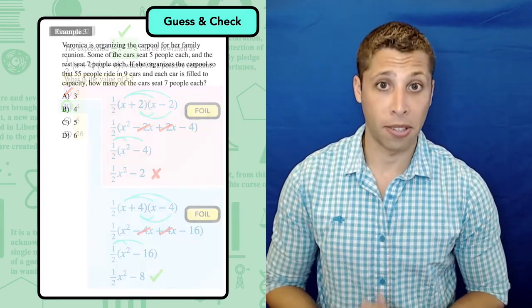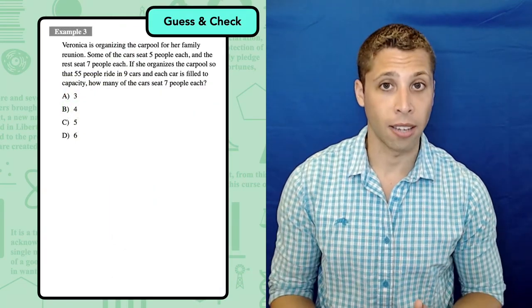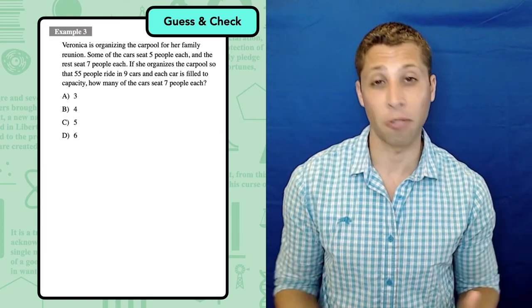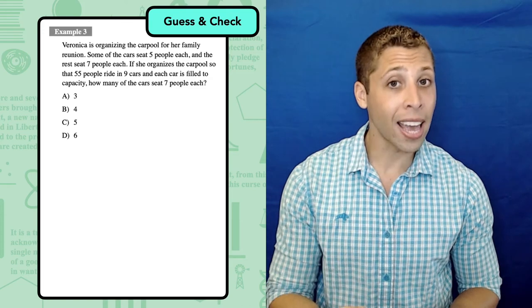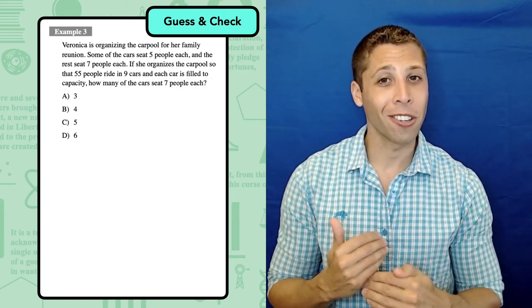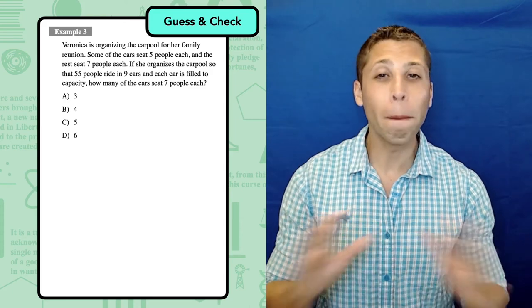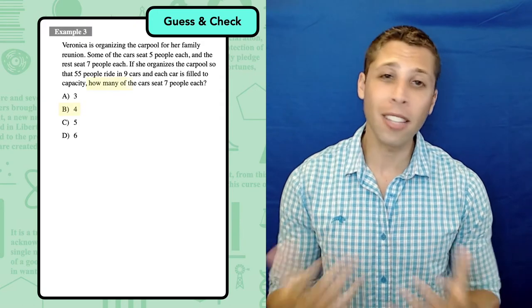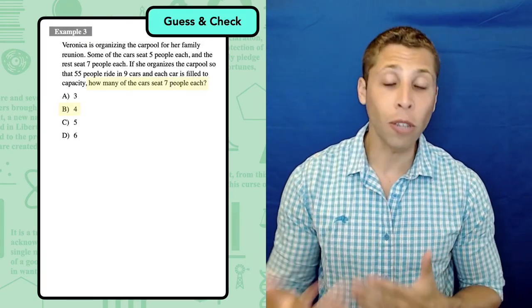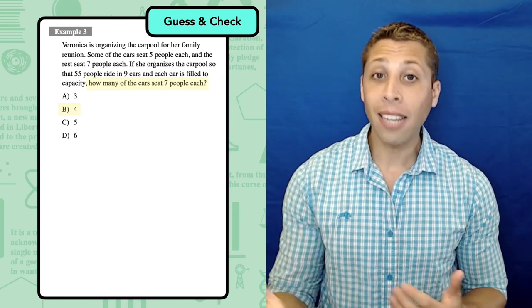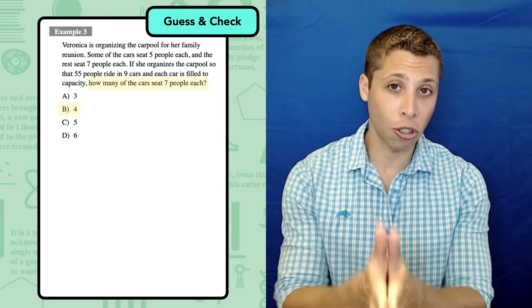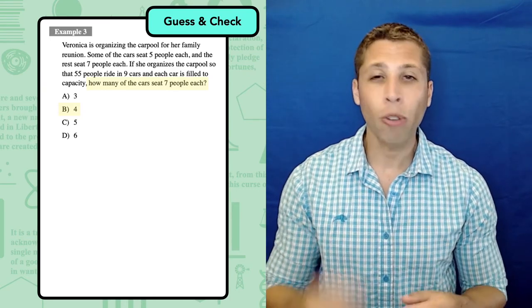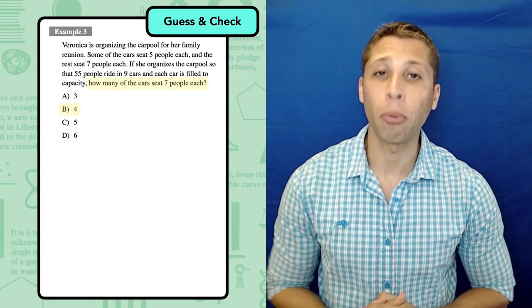This next question might be the opposite case. It's easy to read, but hard to understand. A lot of people have trouble sorting through the stories that just throw a lot of information at you at once. Guess and Check, once again, lets us reverse the way we think about the question. We can start with the answer choices, which are much easier to understand than the question. I'd guess choice B first because it's in the middle. And if I'm wrong, I can adjust by moving toward a bigger or smaller number. But guessing choice B gives us a clear starting point. What would it mean if we had four cars that sat seven people each? Try to work backwards from that information and see if you can prove the correct answer.